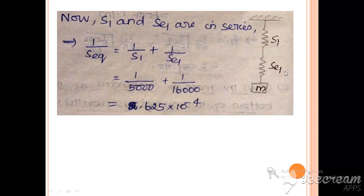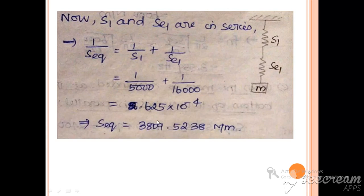Now the system can be converted such that S1 and the equivalent stiffness SE1 are connected in series. To find the equivalent spring stiffness of this combined system, we apply the series formula, giving an equivalent spring stiffness of 3809.52 N/m.